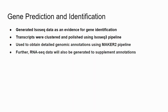We then moved on to gene prediction and identification. For this purpose, we generated IsoSeq data as evidence for gene identification. From this IsoSeq data, we generated transcripts using the IsoSeq3 pipeline and provided them to the MAKER2 pipeline for gene identification. Further, we are planning to generate RNA-seq data, which will supplement these annotations, and we will also plan differential gene expression analysis at different saline conditions.